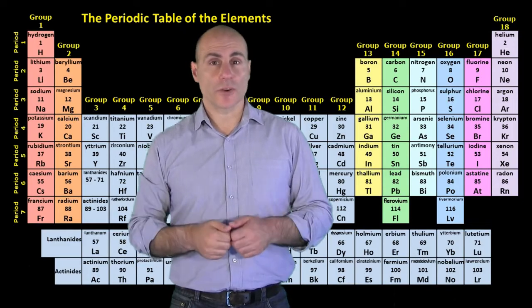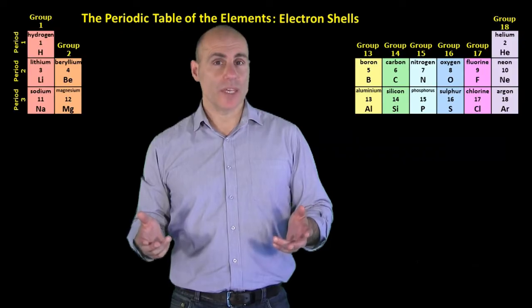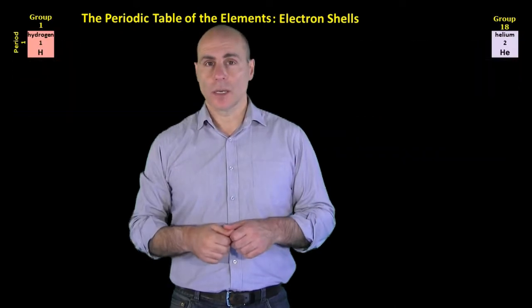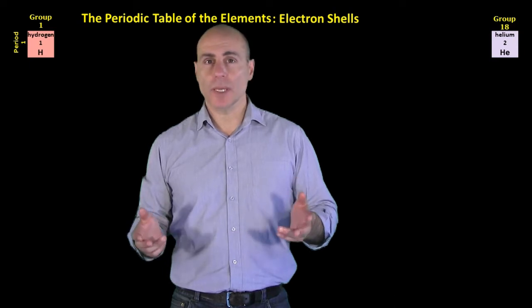Let's look at the electron configurations of the first eighteen elements, beginning of course with the elements in period one. Remember, the horizontal rows of the periodic table are called periods.